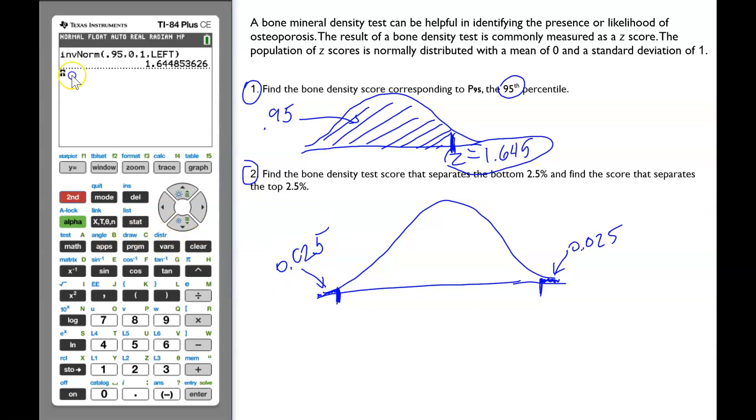Go to 2nd, VARS, invnorm, enter. Area to the left is 0.025. Enter. Enter again. It's negative 1.96, rounded to 2 decimals.